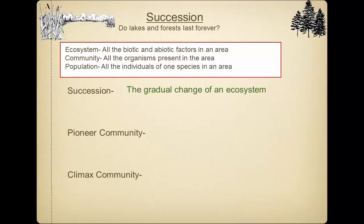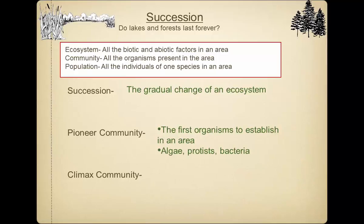Different areas have different types of succession. In our area, basically any ecosystem would eventually turn into a forest, but that's not true everywhere — some places succession leads to desert, savanna, or swamp, depending on location and conditions. We call the very first organisms that come into an area the pioneer community — just like the first European settlers who moved west. The final stages we call the climax community. In our area, that's a forest.